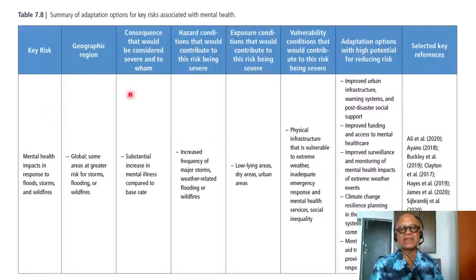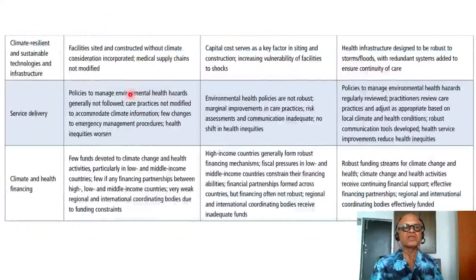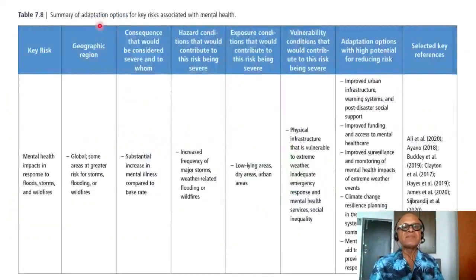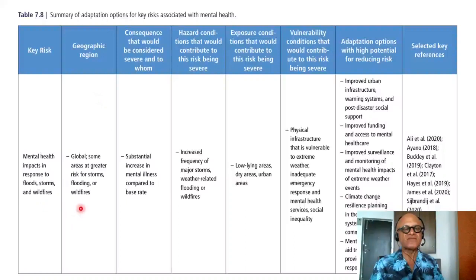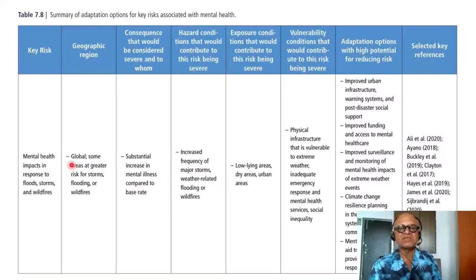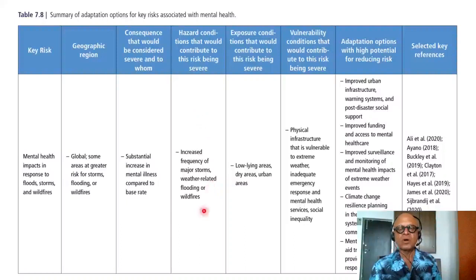Next is the summary of adaptation options for key risks associated with mental health. Key risks are mental health impacts in response to floods, storms, and wildfires. Geographic region is global, with some areas at greater risk. Consequences include a substantial increase in mental illness compared to base rate. Hazard conditions contributing to severe risk include increased frequency of major storms and related flooding or wildfires.